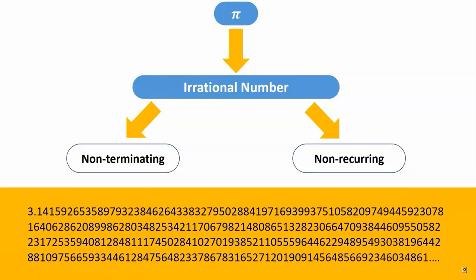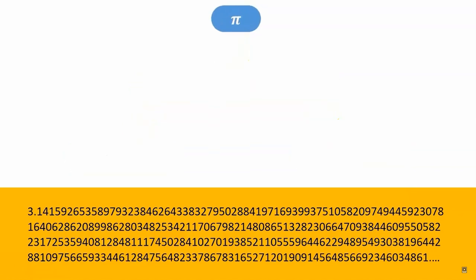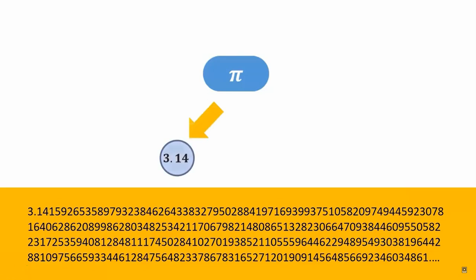As it is not possible to write down all the digits in pi, whenever we have to write pi we simply use the Greek symbol π. In calculations, we can't use an endless value, so we use approximate values of pi such as 3.14 or 22 divided by 7.